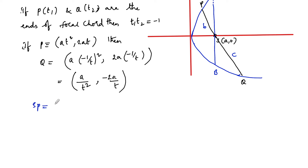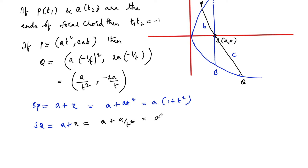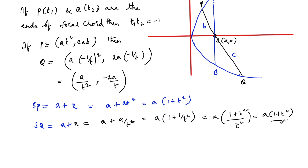We have SP equal to a plus the x-coordinate of point P, that is a + at² = a(1 + t²). And SQ is equal to a plus the x-coordinate of Q, that is a + a/t², which simplifies to a(1 + t²)/t².